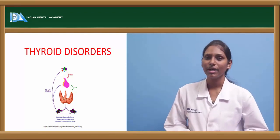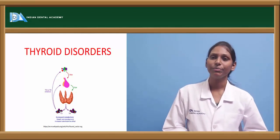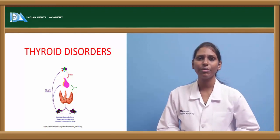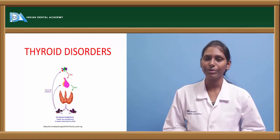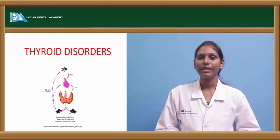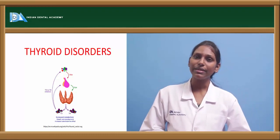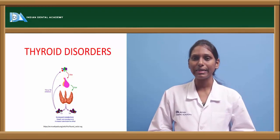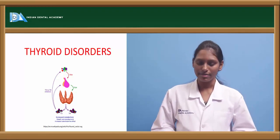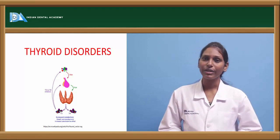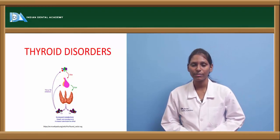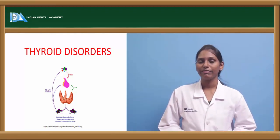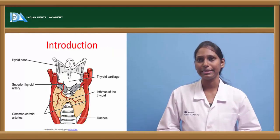The topic for discussion is thyroid and various thyroid disorders. Thyroid is one of the important endocrine glands of the human body where the hormones released by it maintain the homeostasis of the body, and are very important for the basal metabolic rate. We will discuss various thyroid disorders, both hyperthyroidism and hypothyroidism, their clinical manifestations, oral manifestations, and how they are treated.